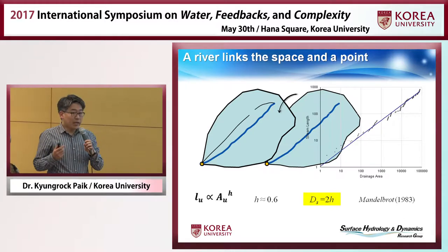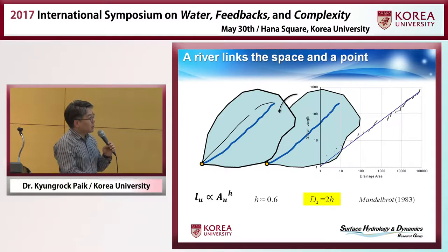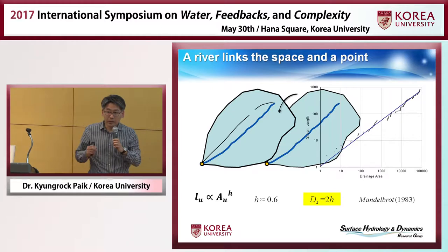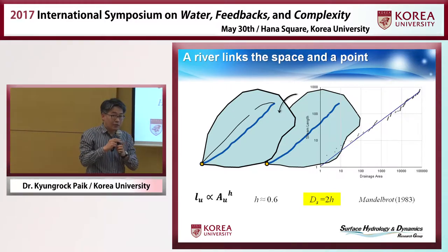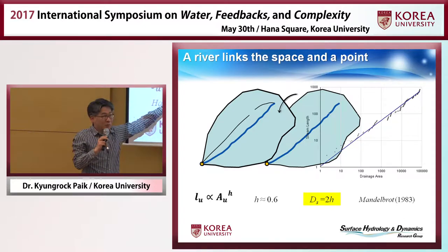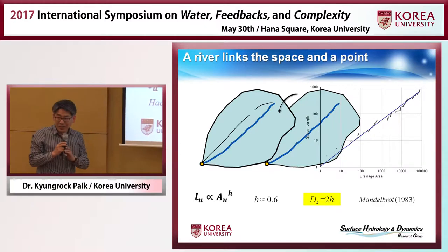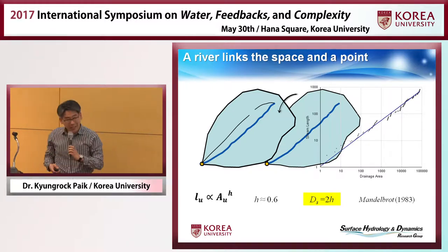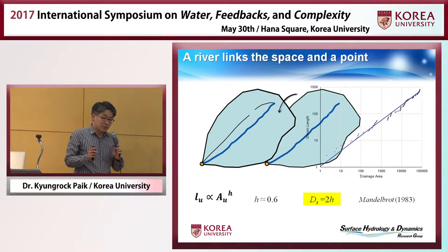In many cases in physics, power law indicates scale invariance — in other words, something that happens at a very small scale is repeated at a very large scale. Why does that happen in a river? The second question is about dimension. We know the dimension of length is length, and the dimension of drainage area should be length squared. For this equation to be dimensionally consistent, H should be 0.5. But empirical analysis of many rivers in the real world finds H is not 0.5 — it's slightly bigger, actually around 0.6.